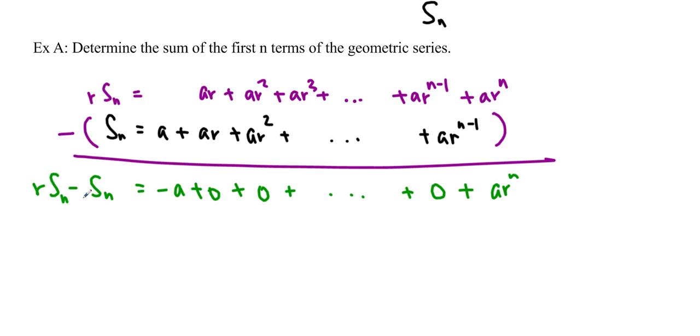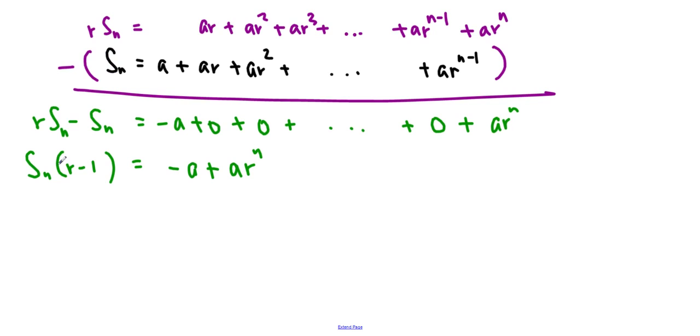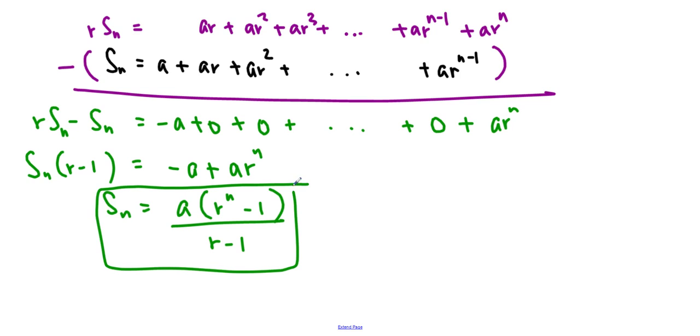So if I common factor this, I get s sub n times r minus 1 is equal to, and I'll get negative a plus a times r to the n. So now I'm just going to simplify this a little bit further so I can isolate s sub n because that is the term I'm looking for. And I'm also going to factor the a out and just rearrange these so I get r to the n minus 1 over r minus 1. And this is actually the general term for the series of geometric series.